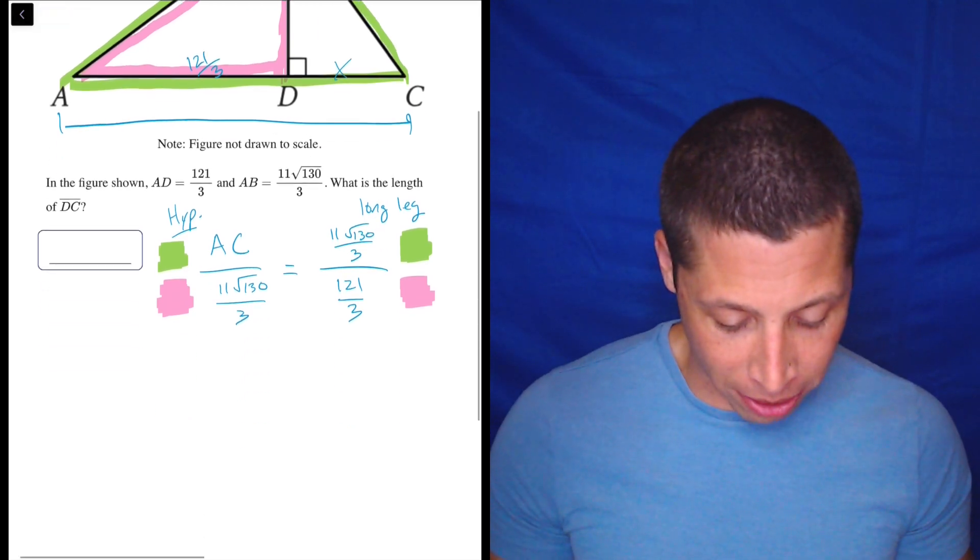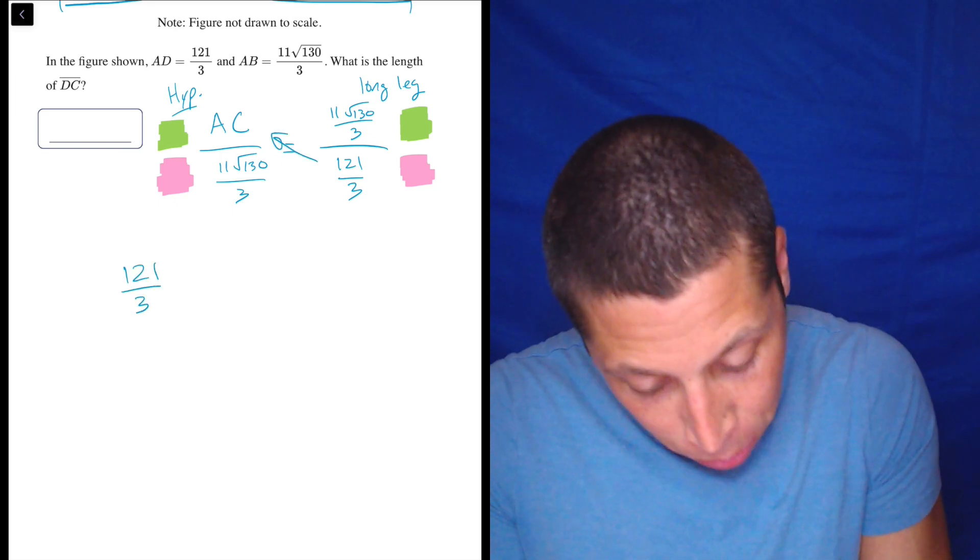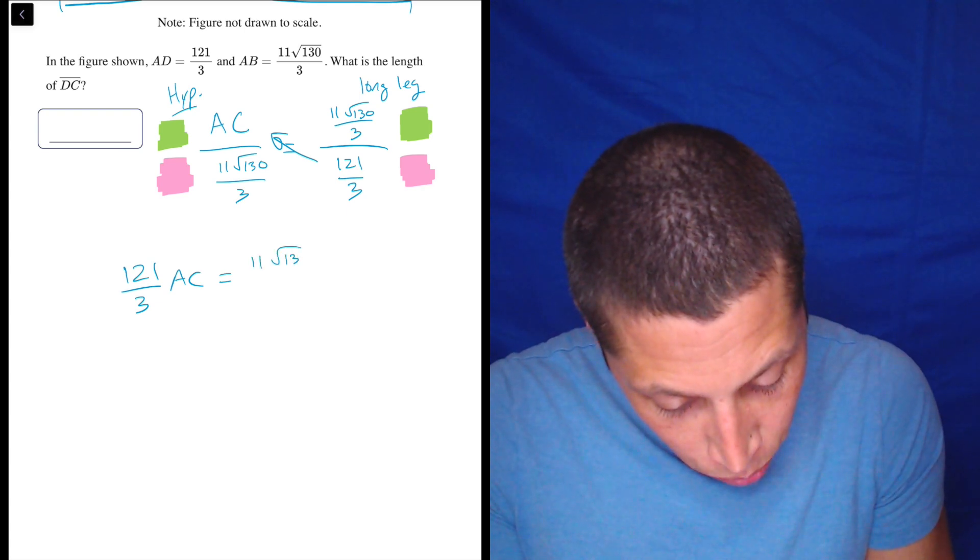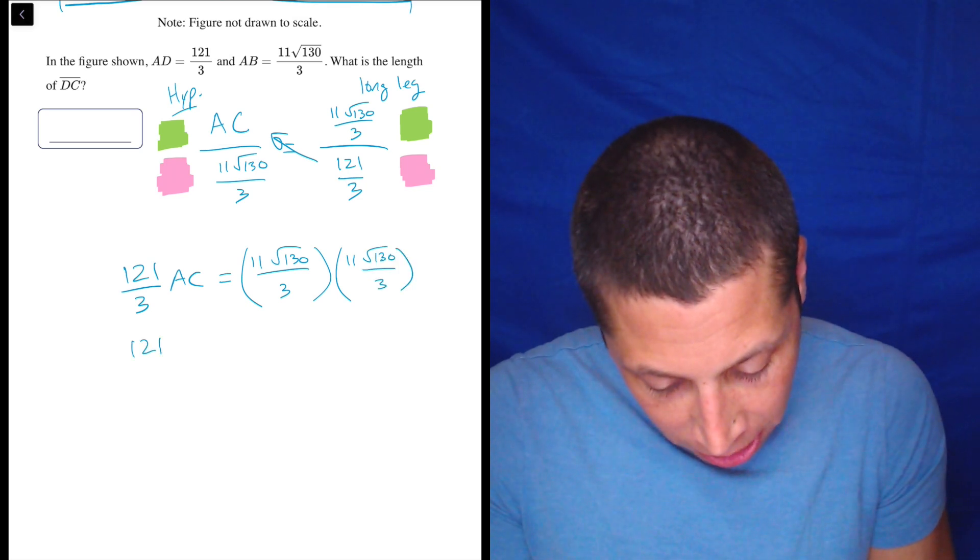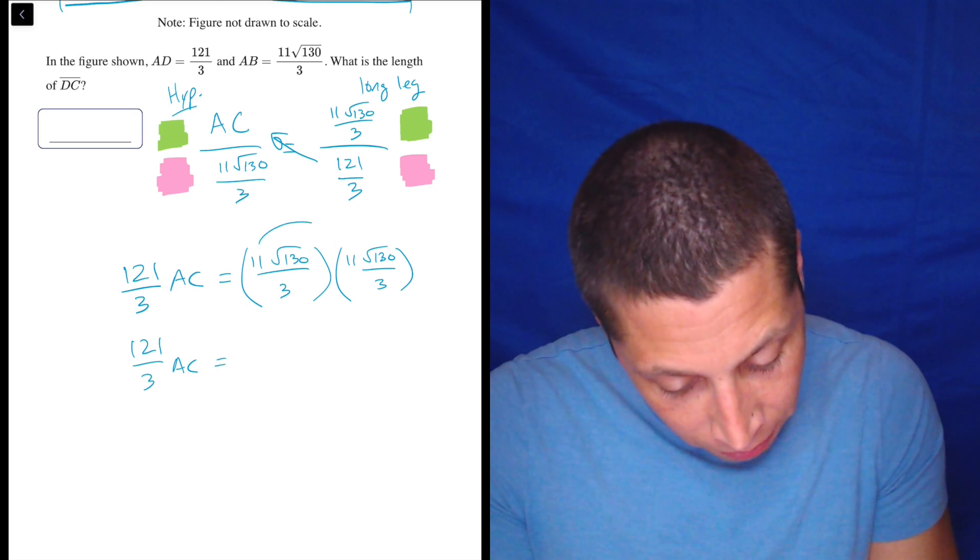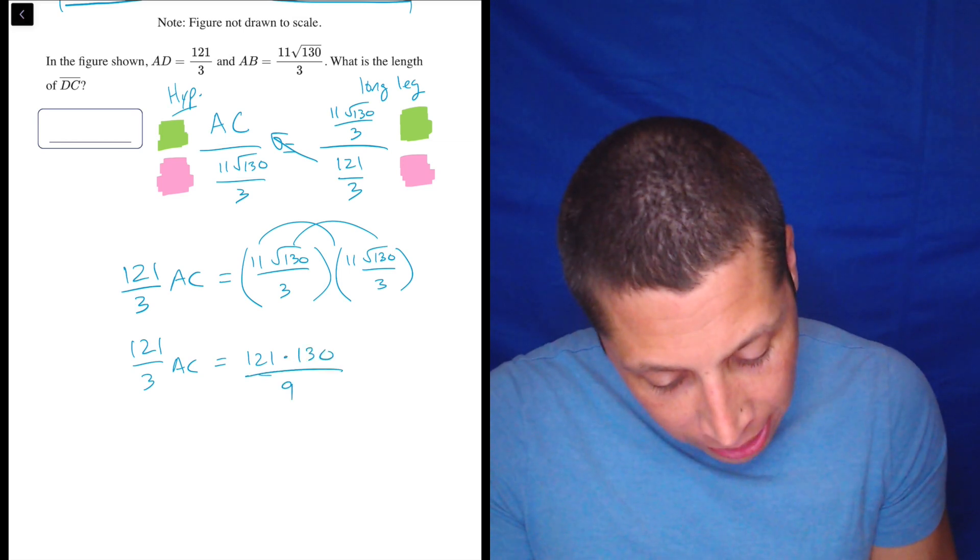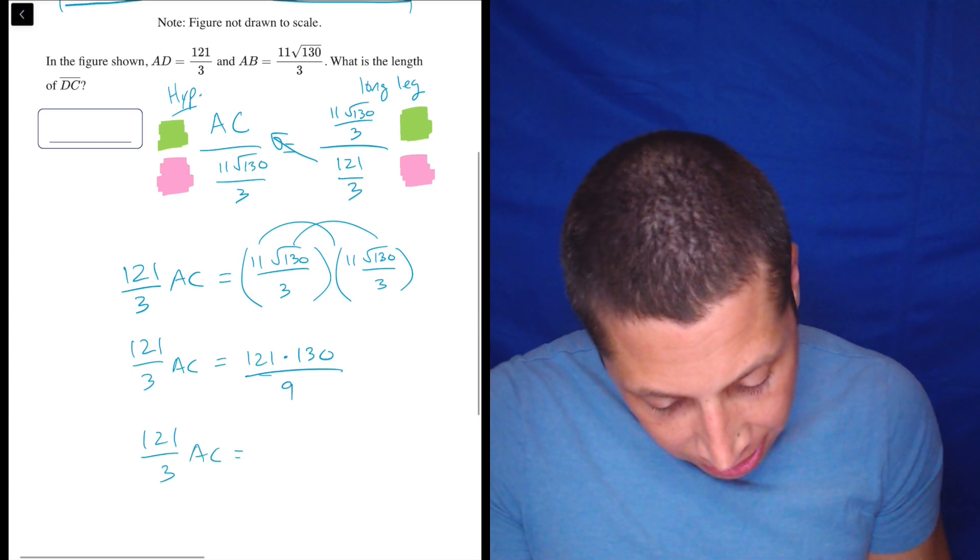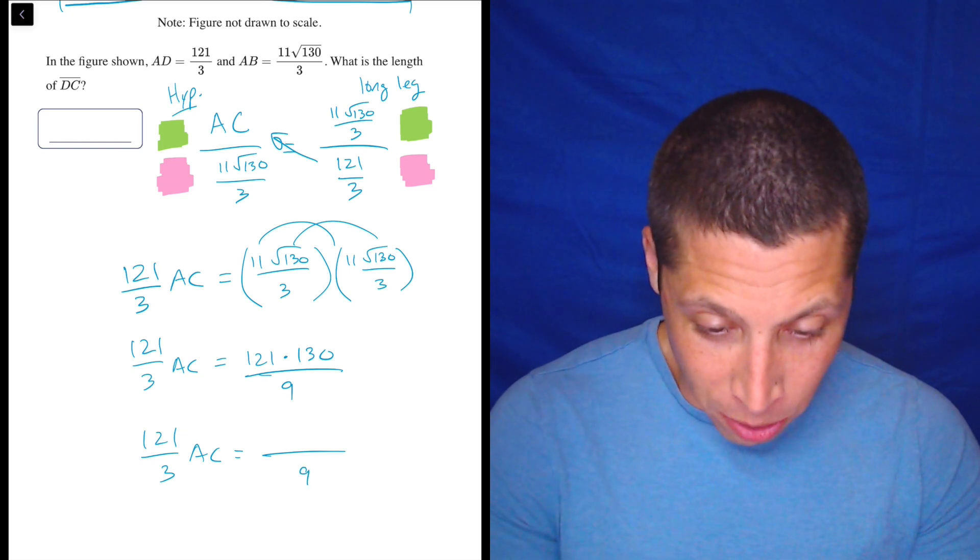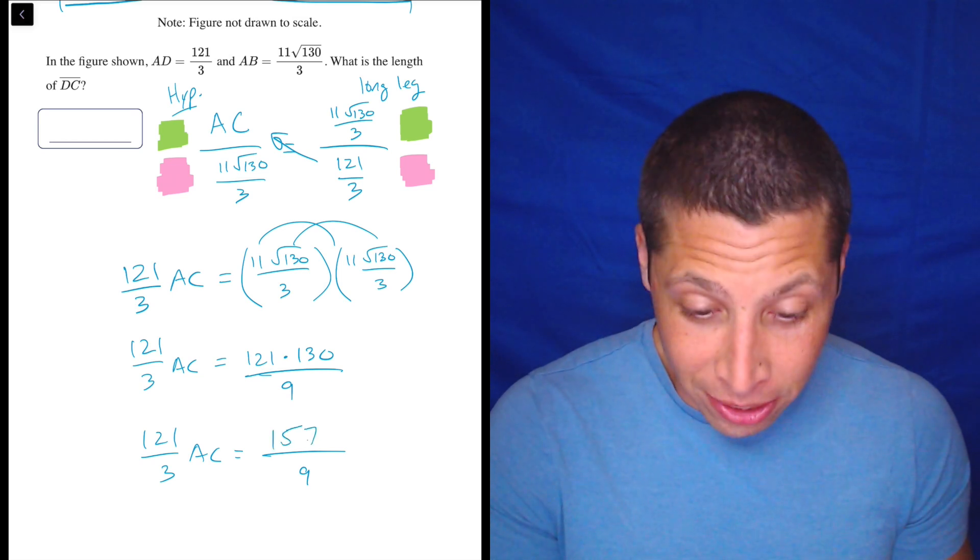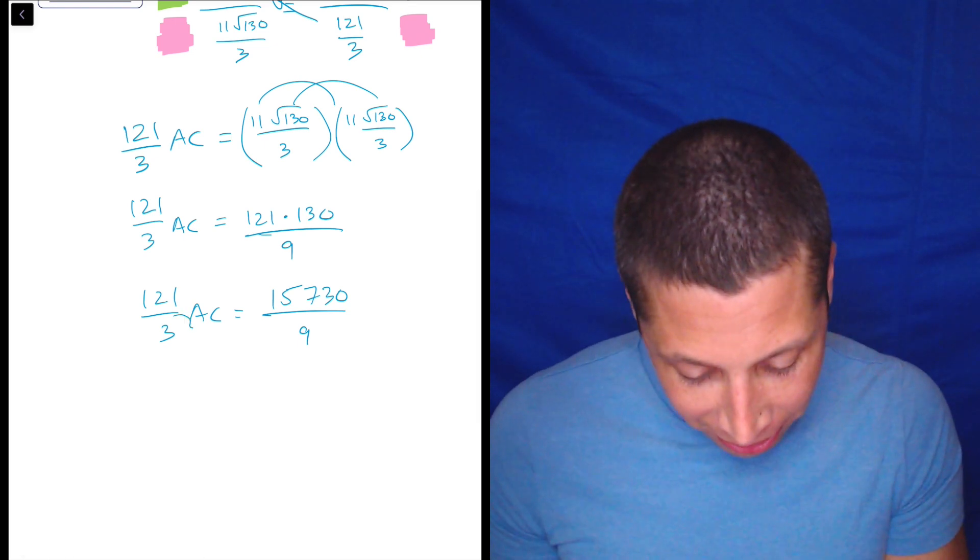And now to solve, you just kind of do a lot of cross multiplication. So let's just do the old fashioned way. We could go to Desmos, but I'm feeling adventurous. So 121 over three multiplied by AC is equal to 11 root 130 over three times 11 root 130 over three. And a lot of cool things happen. So let's just keep this side the same. Everything here kind of doubles up, right? So 11 squared becomes 121, radical 130 squared becomes just 130, and three times three is nine.